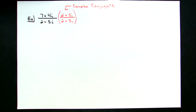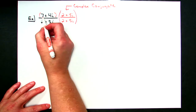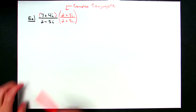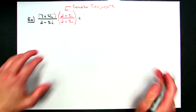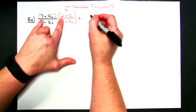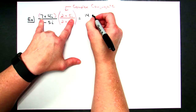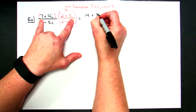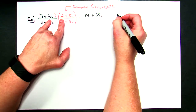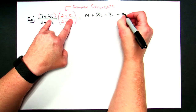On the top, remember that 7 plus 4i is a binomial, so I've got a binomial times a binomial in the numerator and I have to FOIL it out. First terms: 2 times 7 is 14. Then outside terms: 7 times 5i gives 35i. Inside terms: 4i times 2 gives 8i. And last terms gives me 20i squared.